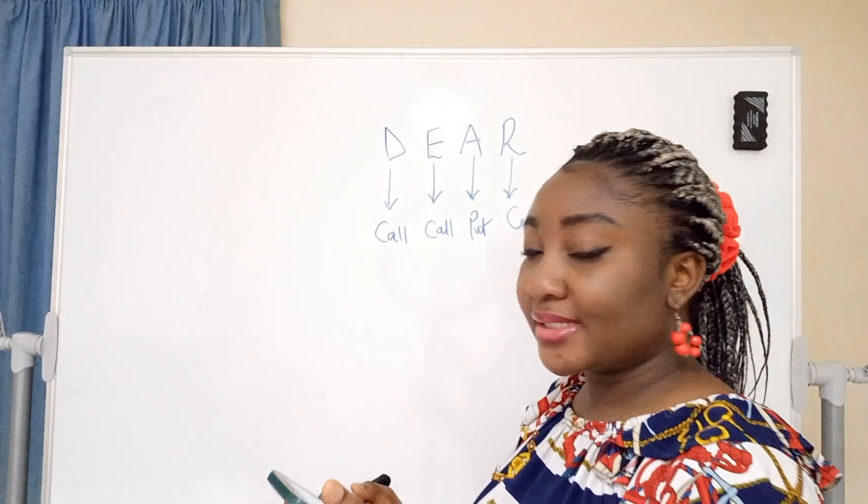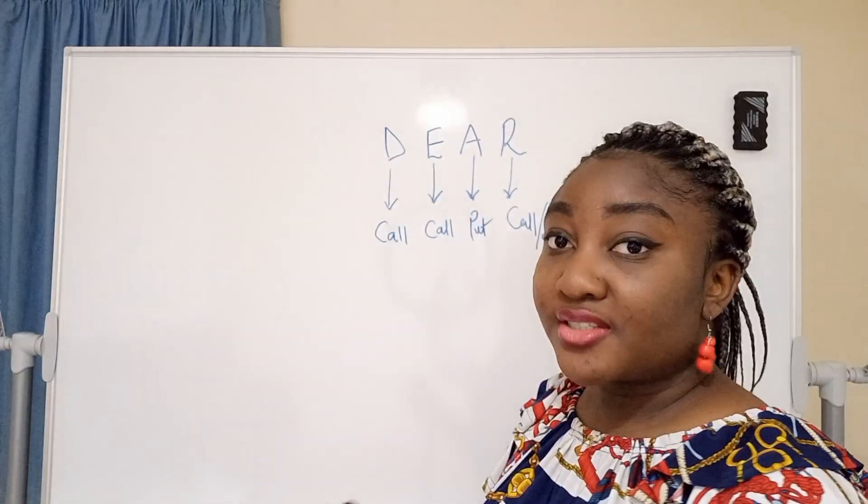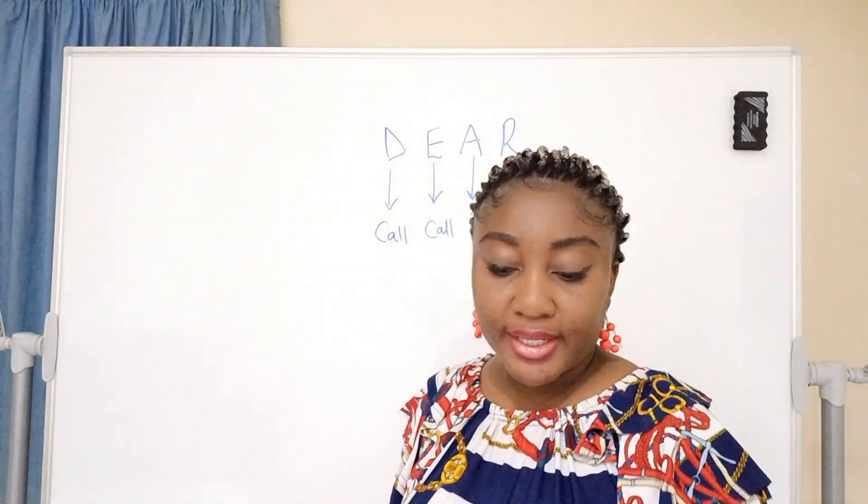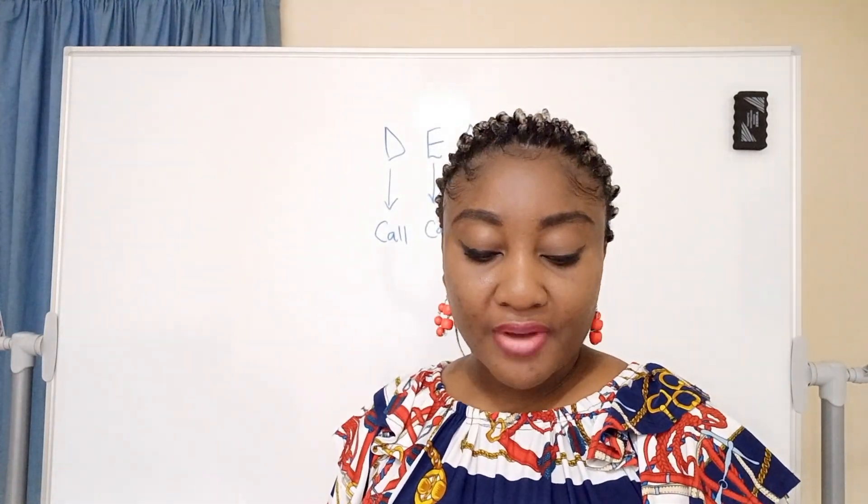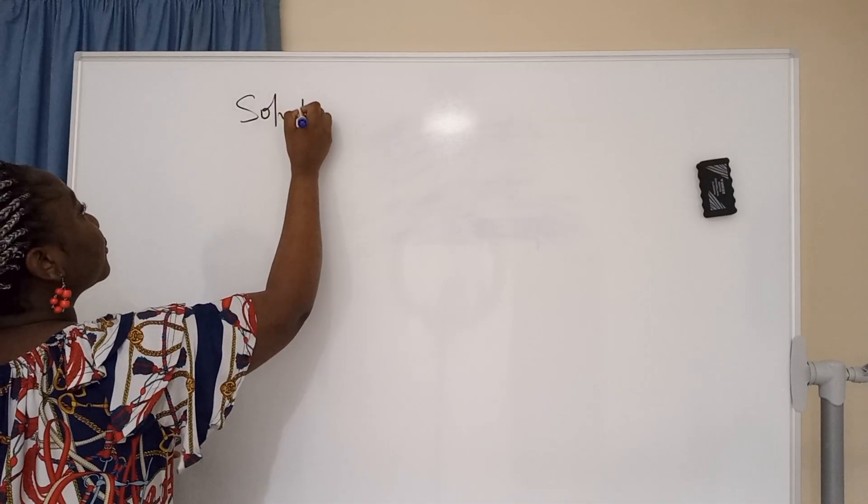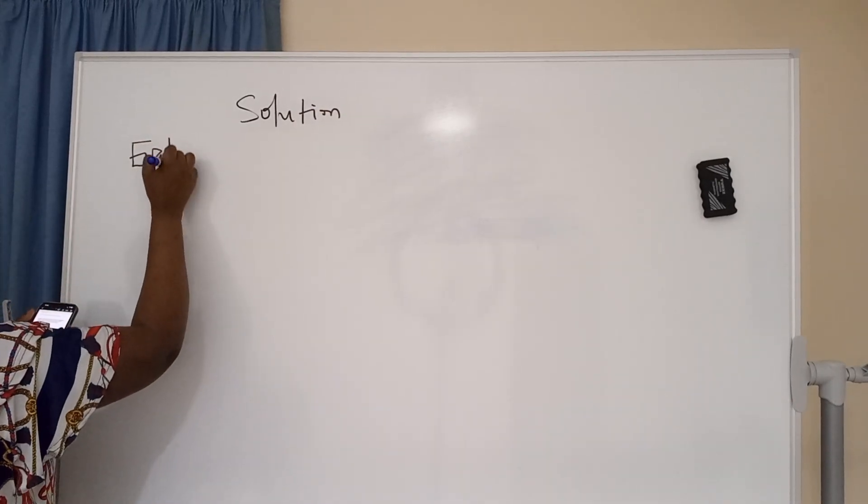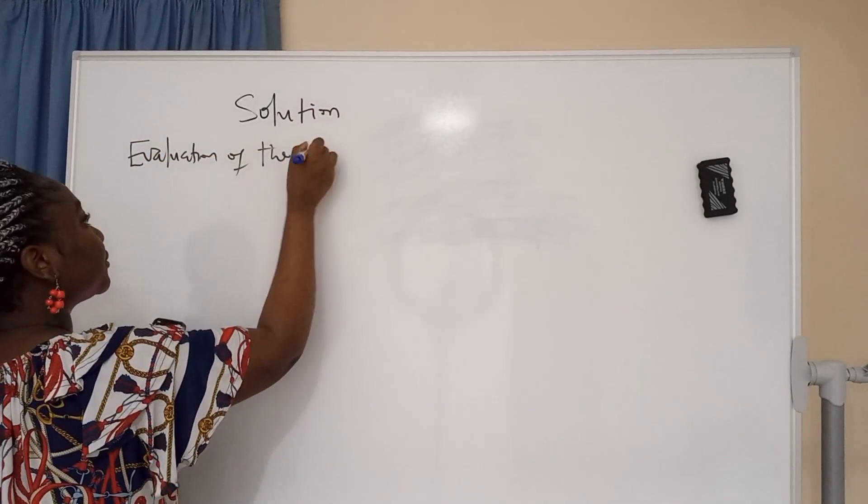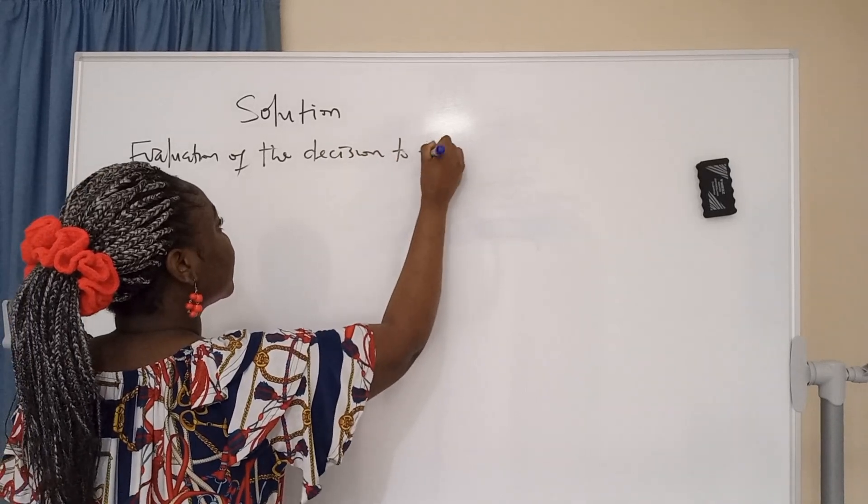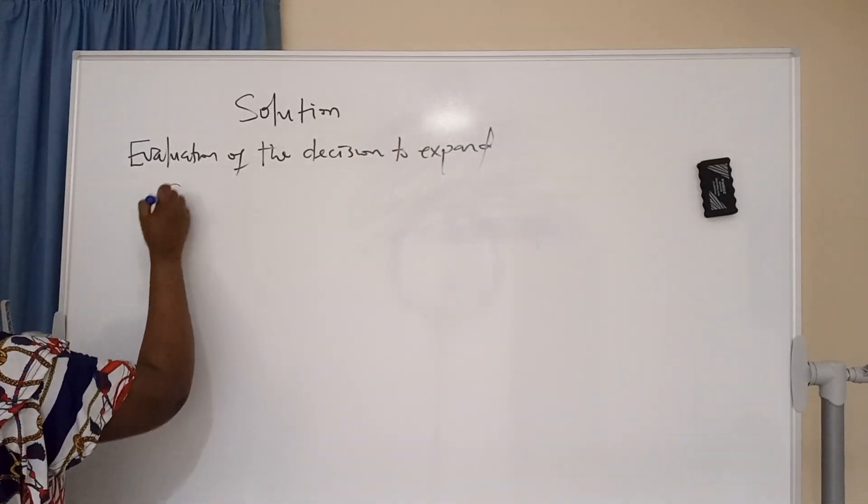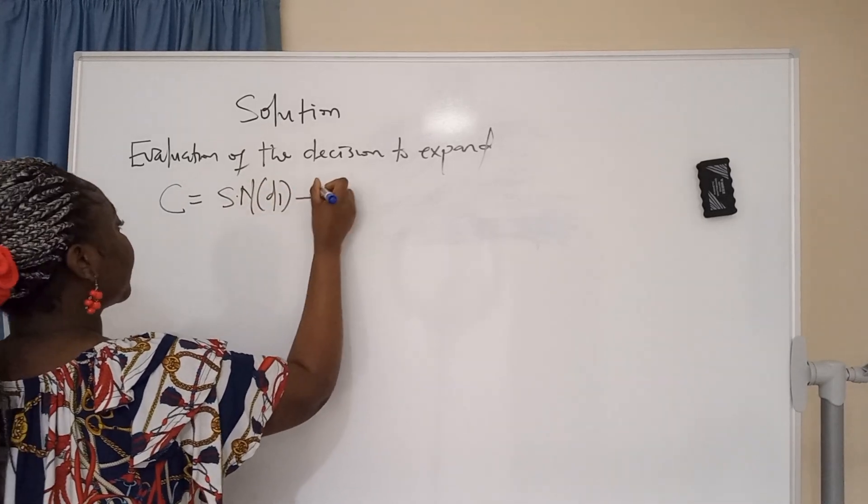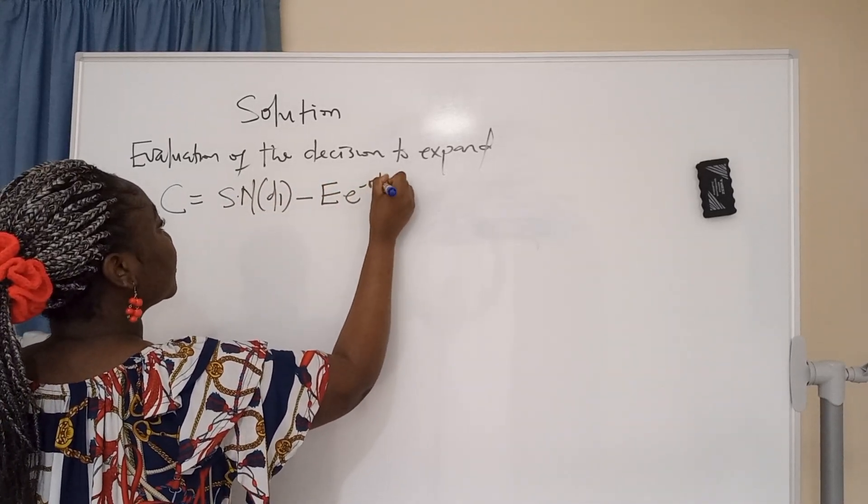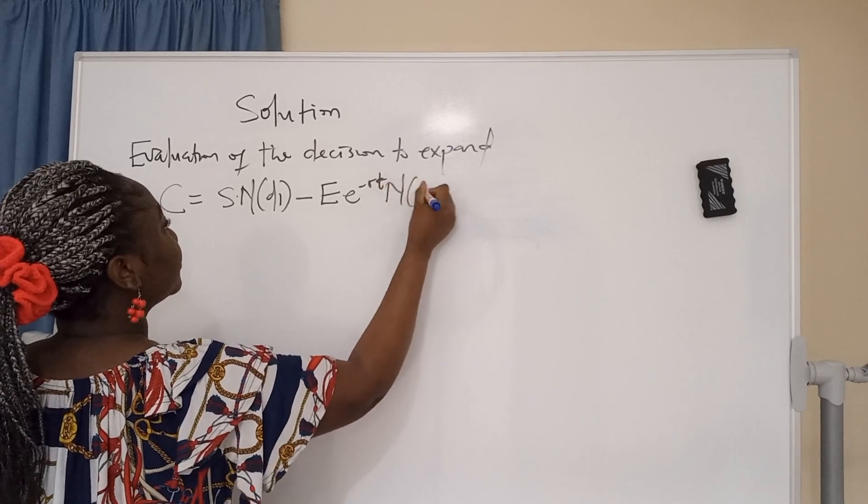From this question, it is clear that this is an expansion, because they said the decision to expand. Anytime you see a question in option pricing, state your five key variables. Solution: Evaluation of the decision to expand. Let the formula guide you: C = S·N(d1) - E·e^(-RT)·N(d2).